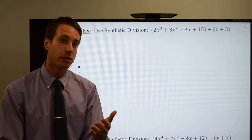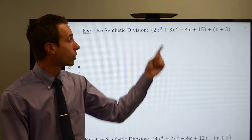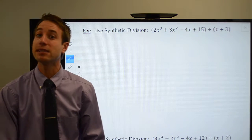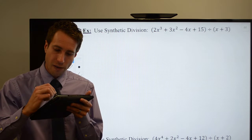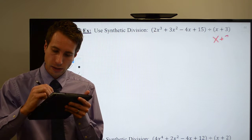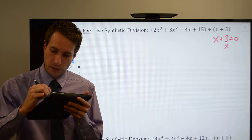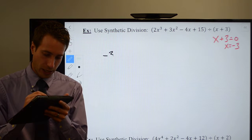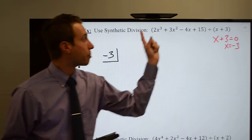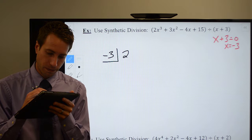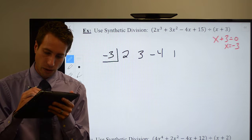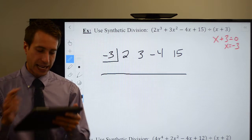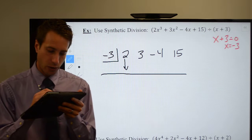The only thing you need to do is check to make sure that you don't need a placeholder. X to the third, X to the second, X to the first, X to the zero. Everybody is there, so we're all set. We start off by setting our divisor equal to zero, and that'll be the number that I'm going to do my synthetic division with. So negative three goes inside the box. And then I pull out all of my coefficients: two, three, negative four, and 15. Set up my bar to separate my work from my answer and bring down that very first coefficient.